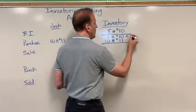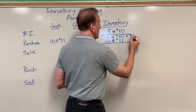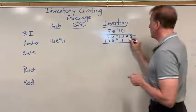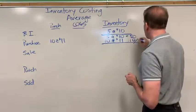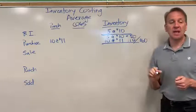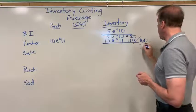Five at ten would be fifty dollars, and then ten at eleven is one hundred ten dollars. So here I've got a total of one hundred sixty dollars and I've got a total of fifteen units. So I'm going to divide this by fifteen soccer balls.